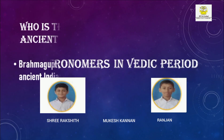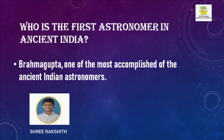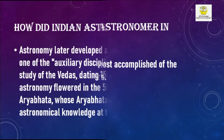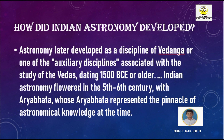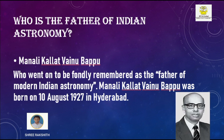Astronomers in the Vedic Period: Brahmagupta was one of the most accomplished of the ancient Indian astronomers. Indian astronomy later developed as a discipline of Vedanga, one of the auxiliary disciplines associated with the study of the Vedas, dating to 1500 BCE. Ancient Indian astronomy further developed in the 5th to 6th century with Aryabhata, whose Aryabhatiya represented the pinnacle of astronomical knowledge at the time.